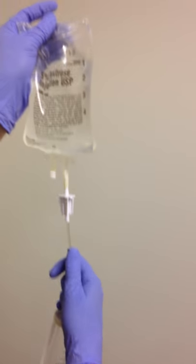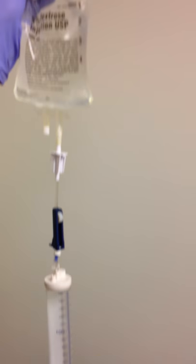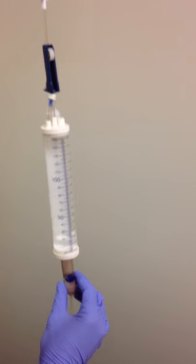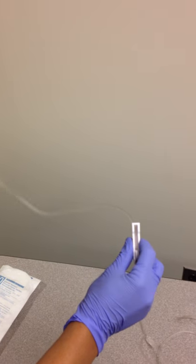We're going to spike the bag like we would any bag. There'll be a bag of D5W, a thumb wheel, the metered dose chamber, the drip chamber, and the line that goes to the patient with the second thumb wheel.